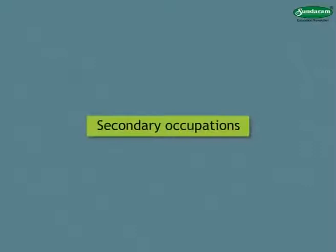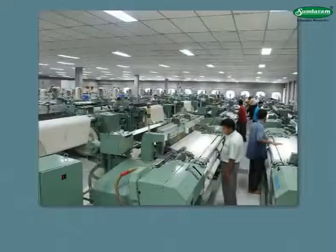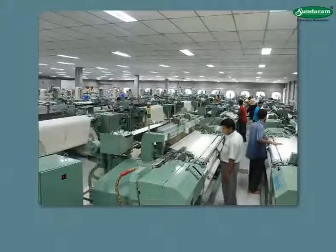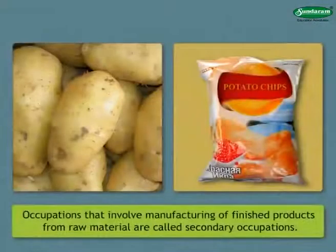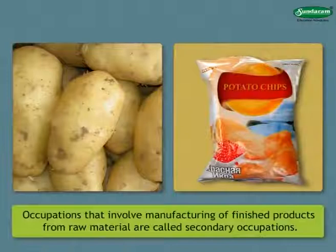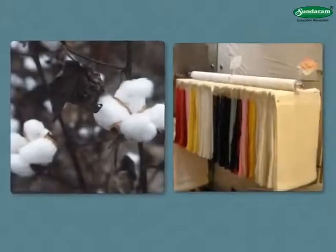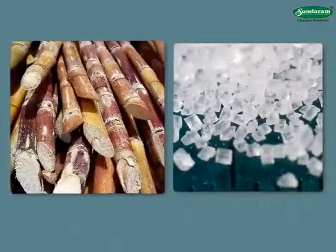Secondary occupations: Through primary occupations, we get different types of things. These are used as raw material and processed to obtain new and more useful things, which are called finished products. Occupations that involve manufacturing of finished products from raw material are called secondary occupations. For example, obtaining cloth from cotton or sugar from sugarcane.